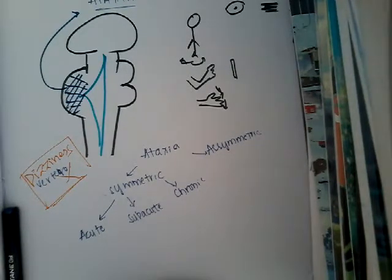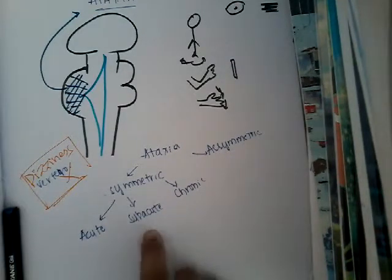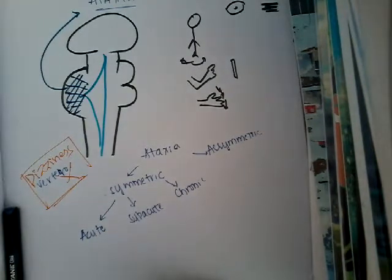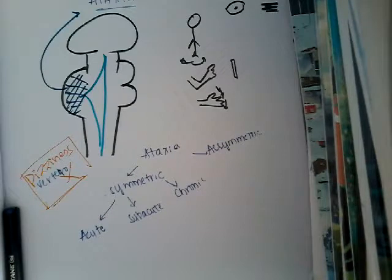There are some subacute causes of ataxia where the problem occurs within days to weeks. For example, a person with cancer may be using chemotherapeutic or cytotoxic drugs; the repeated use of those drugs over some days causes damage to the cerebellum. One of the subacute causes is Lyme's disease, which can also cause subacute cerebellar disease.